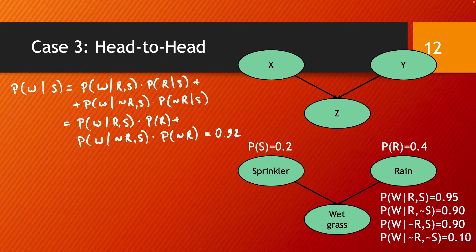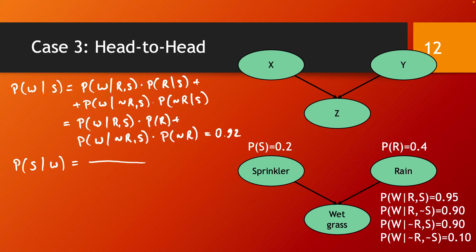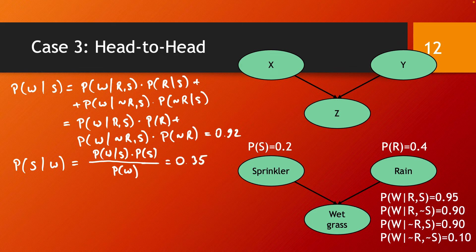We can also do a diagnostic inference, for example calculating the probability of the sprinkler having been on given that we observe the grass is wet. This is inference that goes against the edges, back-propagated through the network. Using Bayes' rule: P(S|W) = P(W|S)·P(S) / P(W). Calculating this gives 0.35.